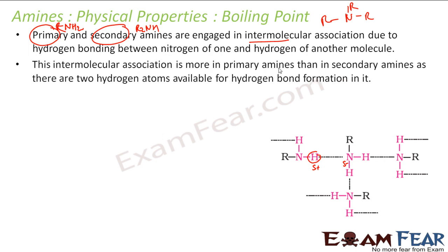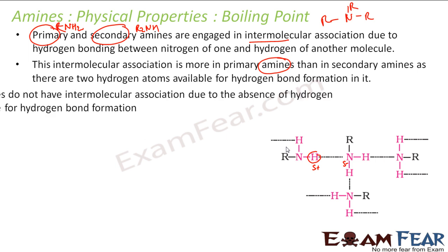With intermolecular hydrogen bonds, they have a higher boiling point. This bond is more in primary amine because there are two hydrogens to form bonds. In secondary amine, one hydrogen to form a bond, and in tertiary amine, no hydrogen to form a bond. Thus primary amine will have the highest boiling point because the intermolecular force between them is greatest. Two hydrogens — more hydrogen bonds. One hydrogen — fewer hydrogen bonds. Zero hydrogen — no hydrogen bonds. More hydrogen bonds means higher boiling point.